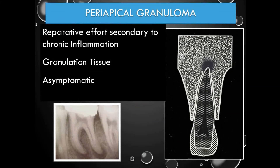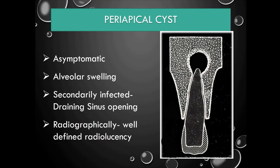Periapical granuloma is a reparative effort secondary to chronic inflammation. There is formation of granulation tissue at the periapical region and it is usually asymptomatic. On the radiograph you can see loss of lamina dura and a well-defined radiolucency at the peri apex.